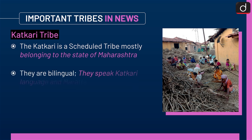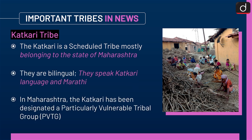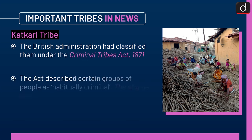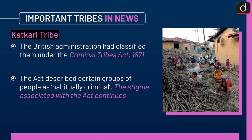Next is the Katkari tribe. The Katkari is a Scheduled Tribe mostly belonging to Maharashtra. They are bilingual, speaking Katkari language and Marathi. In Maharashtra, the Katkari has been designated as a Particularly Vulnerable Tribal Group, i.e., PVTG. The British administration had classified them under the Criminal Tribes Act, 1871, which described certain groups of people as habitually criminal. The stigma associated with the act continues.